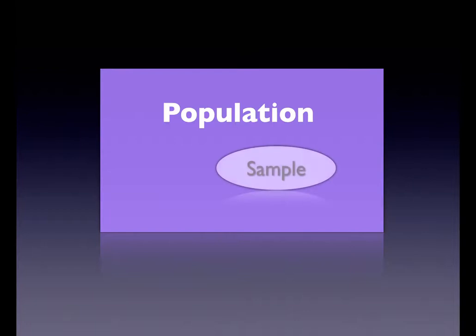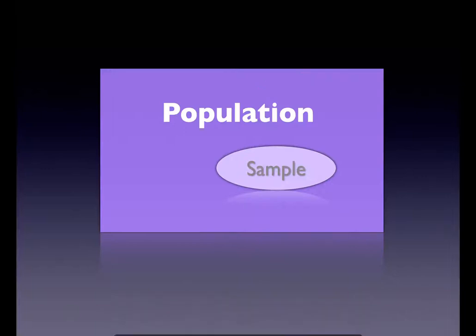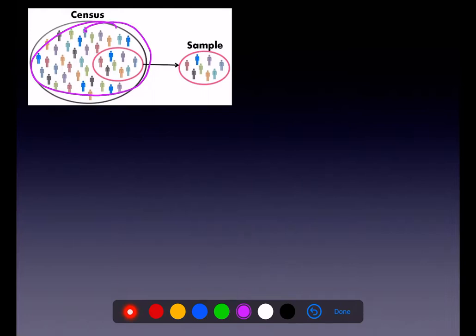If we have our population — an entire collection of individuals or objects that we want to gather information upon — we could think of it as this giant purple square. A lot of times we don't go after our entire population because it takes a lot of time and costs a lot of money, so we just go after a sample, which is a smaller subset of your population. If you ever wanted to actually survey your entire population, we would have to run the census — that's what that means, to actually sample your entire population.